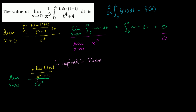When we try to evaluate this limit, the numerator still evaluates to 0 — you get 0 times natural log of 1, which is 0. The denominator 3x squared also evaluates to 0. So we have the indeterminate form again. We might be tempted to apply L'Hôpital's Rule again immediately, but this would be a pretty hairy derivative to take, and we might have to take another derivative after that.